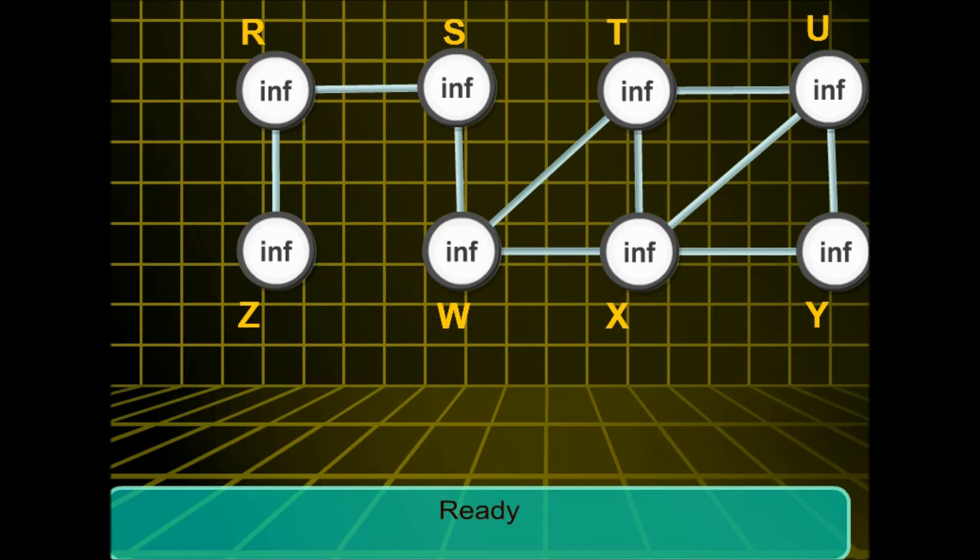So in each iteration we are basically dequeuing one element from this queue of grey elements and then enqueuing all the discovered neighbours of that node. Now let's see how it is done.